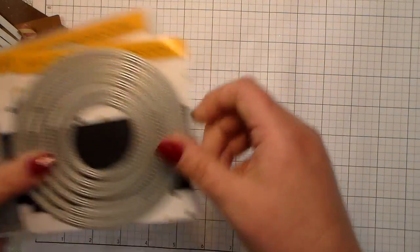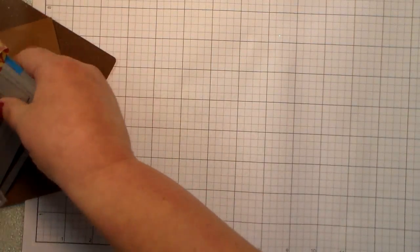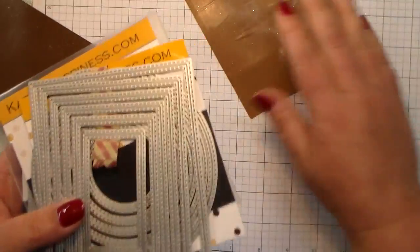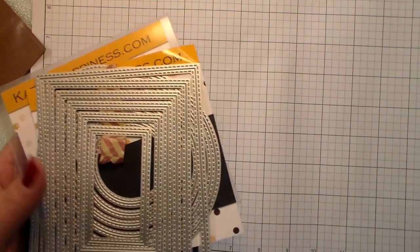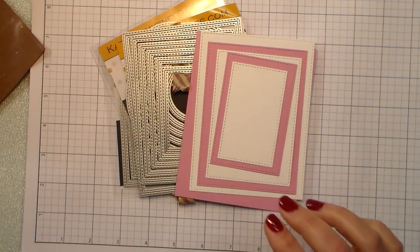So again, there are six dies in each set. There are rectangles, circles, ovals, and squares. And the options with these dies are endless.